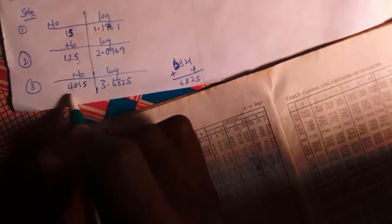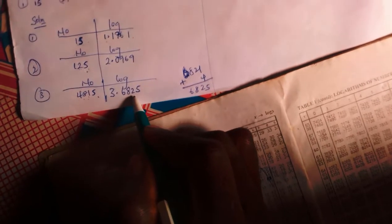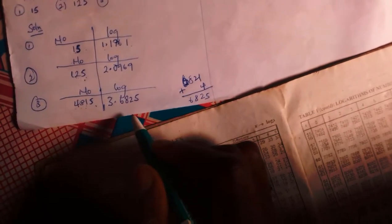So it means if I check log 4815, I'll be getting 3.6825. I'll be watching you guys. Bye bye.